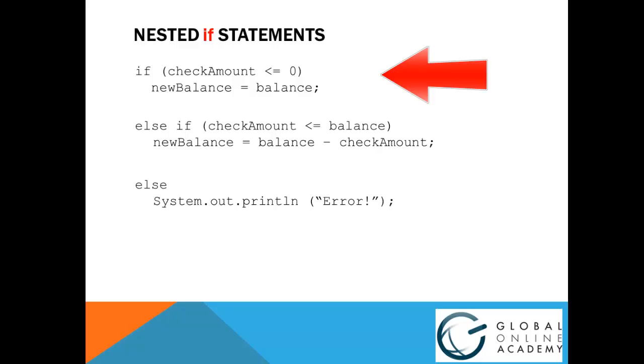Take a look at this. If the check amount is less than or equal to 0, we'll set the new balance to the old one. Else, if that wasn't true, we'll check to see if we have enough money in our account. And if that's true, we'll adjust the balance. Finally, if neither of those were true, we'll print out an error message.